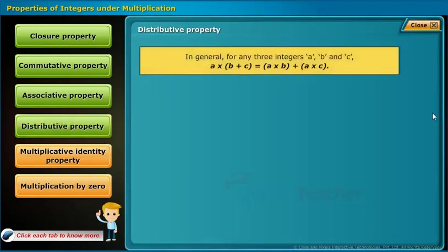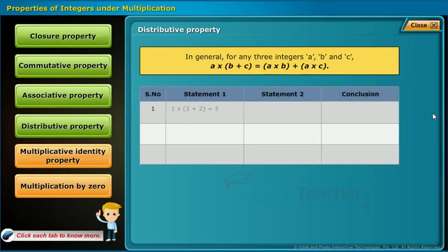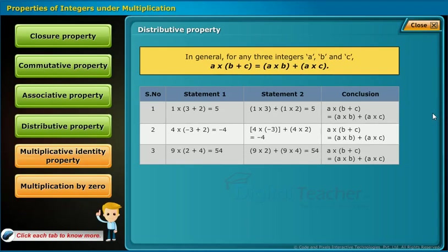Distributive property defines that for any three integers a, b, and c: a into (b plus c) equals (a into b) plus (a into c). For example: 1 into (3 plus 2) equals 5, and 1 into 3 plus 1 into 2 equals 5. The same holds for the second and third statements. Therefore, the table follows distributive property under multiplication.